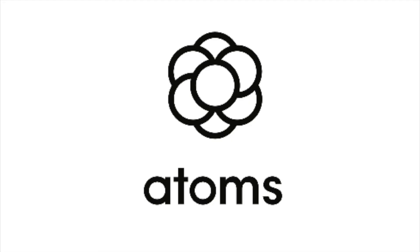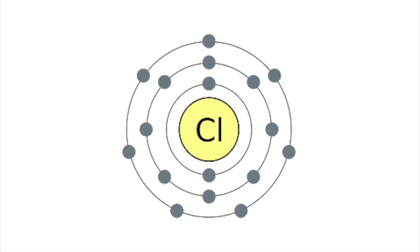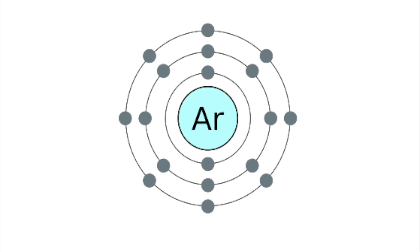Other atoms gain electrons to form negative ions, such as chlorine from group 7 which has an electronic structure of 287. By gaining a single electron it gets a stable electronic structure of argon which has 288.